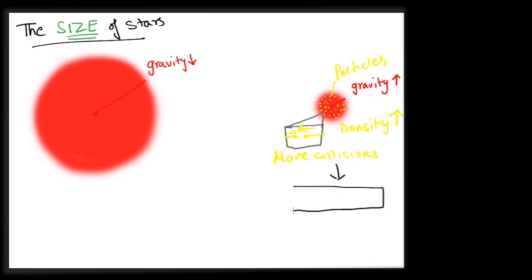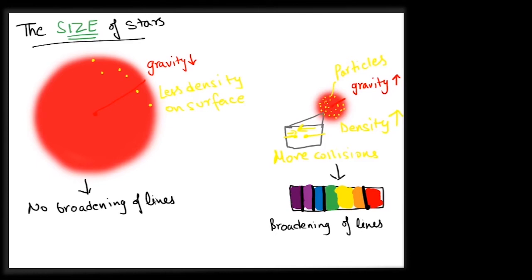Increased collision of ionized atoms with photons of energy and other atoms lead to broadening of spectral absorption lines. Hence, a smaller star will have more broad lines of absorption, while giant stars will have sharper lines due to a dilute surface which means less collisions.